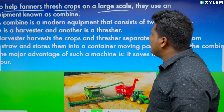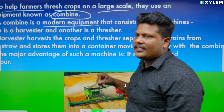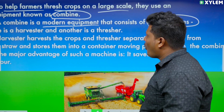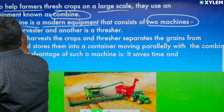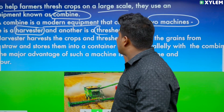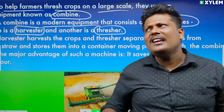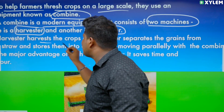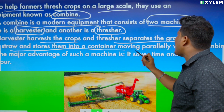In the next step, we are going to use the equipment called a combine. Combine is a modern equipment — it is not traditional. It is modern equipment that consists of two machines. Combine is actually a combination of two machines: the first one is a harvester, which harvests the crop, and the second one is a thresher, which separates grain from the straw. So, the harvester harvests the crop and the thresher separates grain from the straw and stores them in a container, moving parallely.